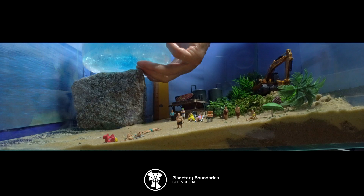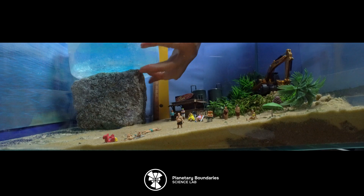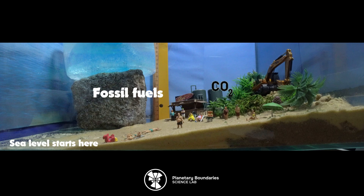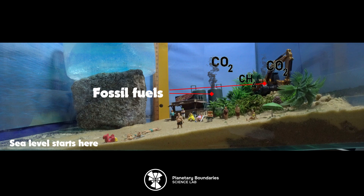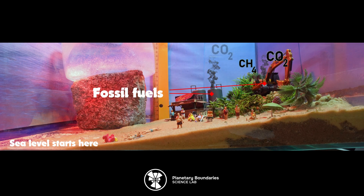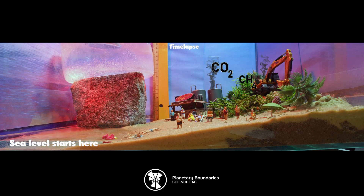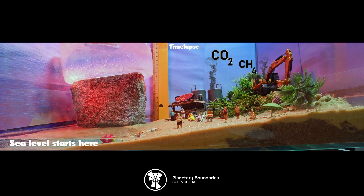Now let's add in some land ice to represent the polar ice sheets and glaciers. We can also add in the impacts of fossil fuel emissions, making the global temperatures rapidly rise, using this infrared heat lamp.